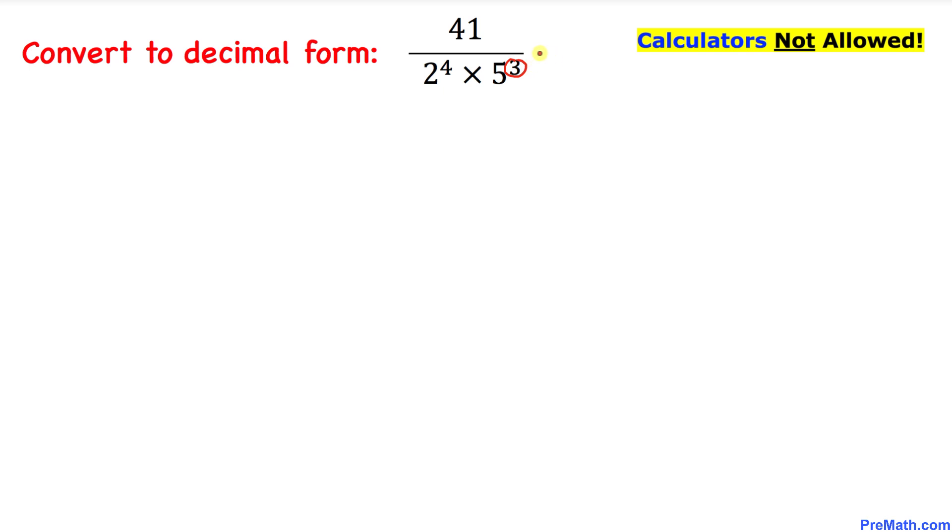To make that, let's go ahead and multiply and divide by 5 power 1 on the top and the bottom. So therefore, on the numerator we got 41 times 5.